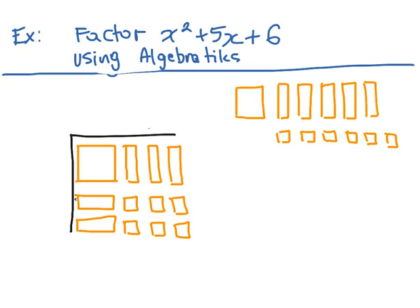But notice that all the sides are lined up together. The 1's lined up with the 1's, the x's lined up with the x's. And our algebra tiles area or rectangle is complete.